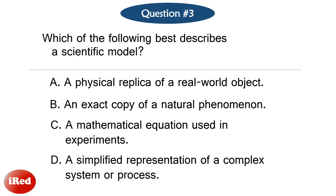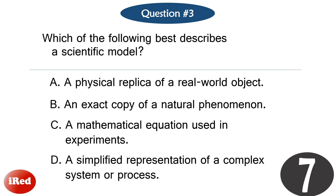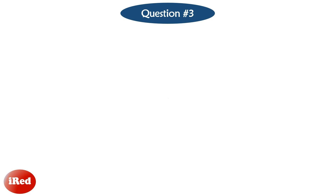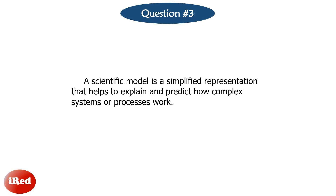Question number three. Which of the following best describes a scientific model? The correct answer is letter D: a simplified representation of a complex system or process. A scientific model is a simplified representation that helps to explain and predict how complex systems or processes work.